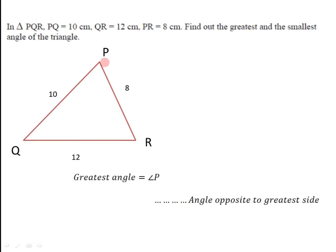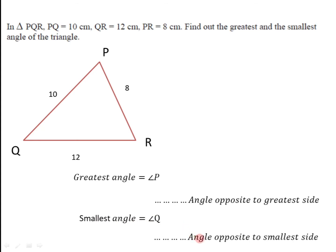In the same way, the smallest side is PR and the angle opposite to PR is angle Q. Since PR is the smallest side, the angle opposite to the smallest side must be the smallest. Therefore, angle Q is the smallest angle.